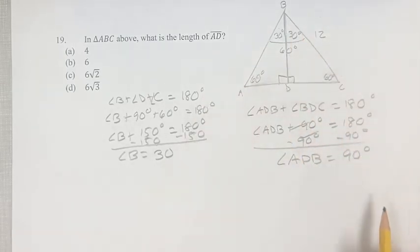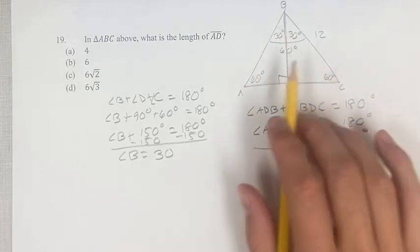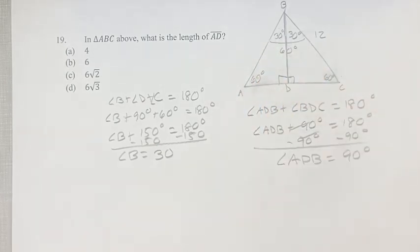Therefore, this is an equilateral triangle because all the angles are the same. Therefore, all the sides are the same. So AB is 12 and AC is 12.